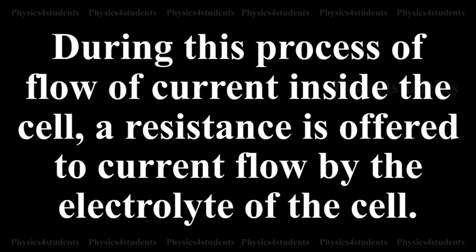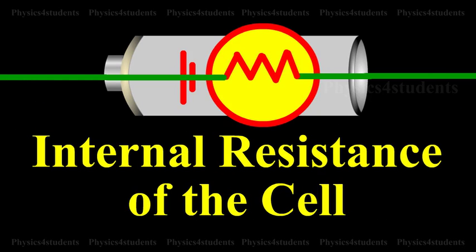During this process of flow of current inside the cell, a resistance is offered to current flow by the electrolyte of the cell. This is termed as the internal resistance of the cell.